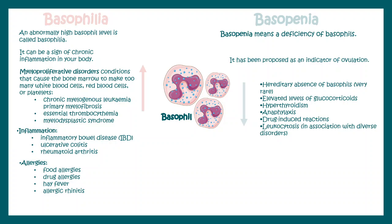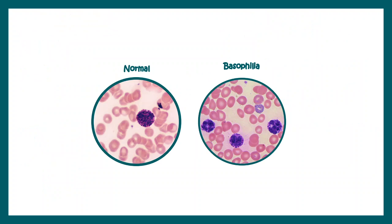Basopenia means a deficiency or decrease in basophil number. It has been indicated as a sign of ovulation. There could be other reasons such as hereditary causes, elevated levels of glucocorticoids, drug-induced reactions, or conditions like anaphylaxis. This is how normal basophils look, and this is how too many basophils look in a slide when there is basophilia.